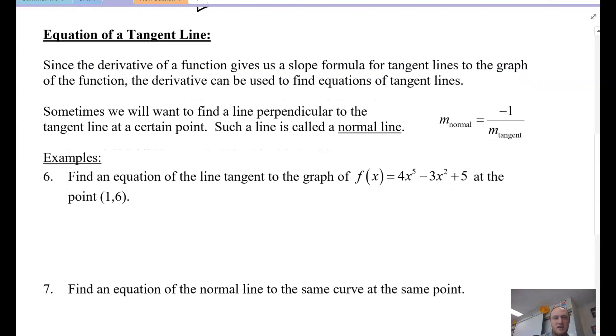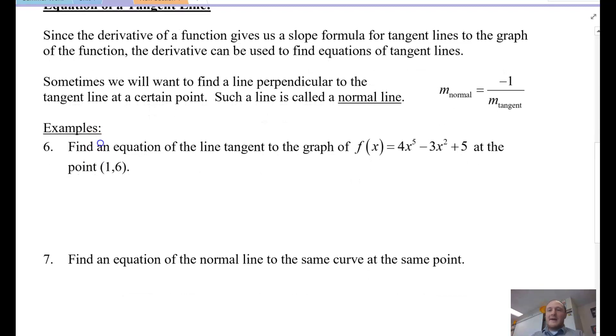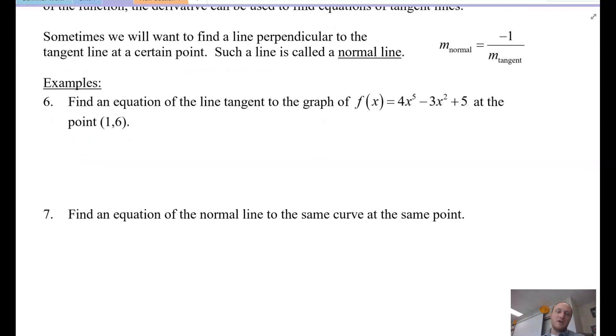Next, the last thing we're going to talk about in this video is the equation of a tangent line. So common practice in calculus, you'll see one of these pop up on the AP exam, most likely. What is the equation of a tangent line? So since the derivative of a function gives us the slope formula for tangent lines to the graph of a function, the derivative can be used to find equations of tangent lines. So slope of the derivative is the tangent. So slope of the tangent line, that is your derivative. You need to know that. And what we'll do, we'll look at this. They introduce a new term called a normal line. And a normal line is the line perpendicular to the tangent line at a certain point. And remember what we know about if I have a line and I want a line perpendicular, their slopes are opposite reciprocals. And that's all that this box here is saying.